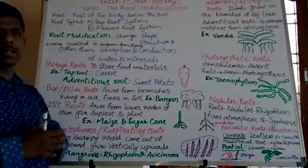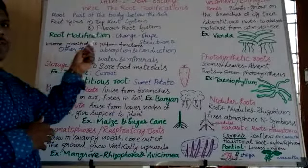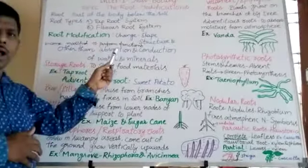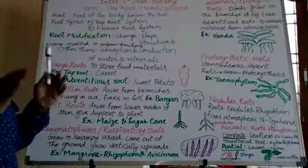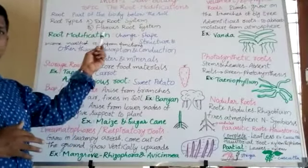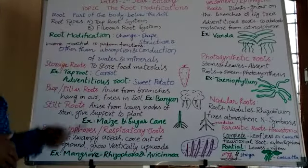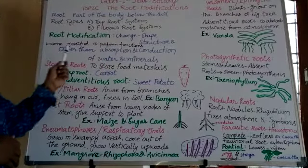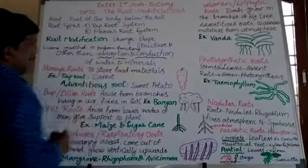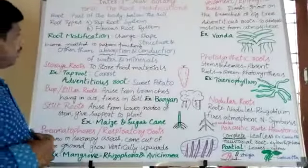What is meant by root modification? Roots in some plants will change their shape and structure and become modified to perform different functions other than the absorption and conduction of water and minerals. This is known as root modification, and there are different kinds of root modifications.